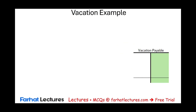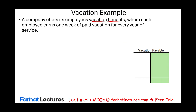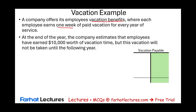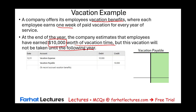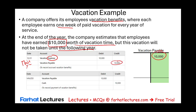A company offers employees one week of paid vacation for every year of service. At year-end, employees have earned $10,000 worth of vacation time, but this vacation will not be taken until the following year. Since they earned it this year, we record the expense this year — December 31st — debiting vacation expense and crediting vacation payable, creating a $10,000 liability. Then when employees take vacation the following year, we debit vacation payable and credit cash, removing the liability.